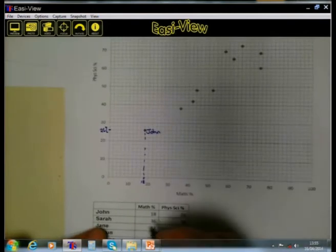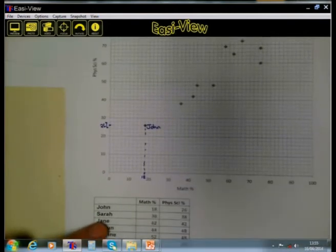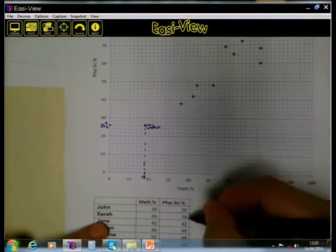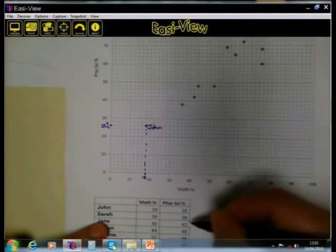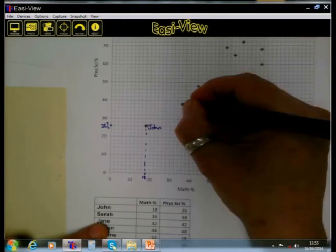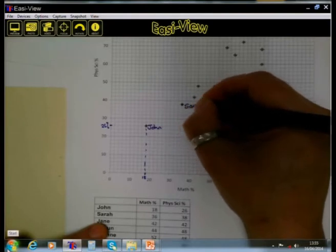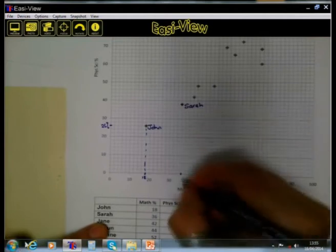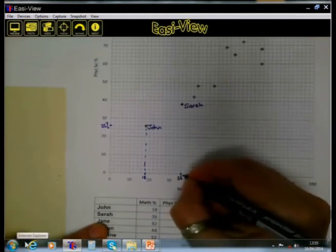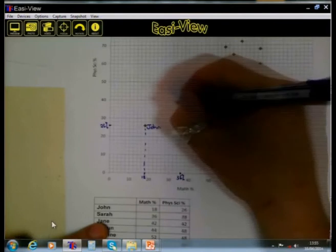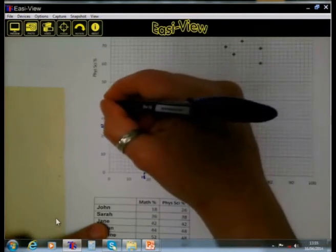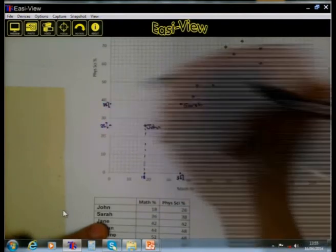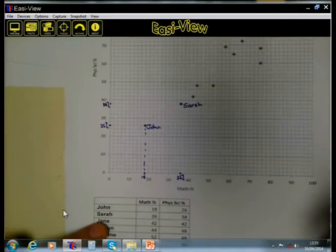Now, just like so, we can go on to Sarah. Sarah had 36% for mathematics, 36% and 38% for physical science. So this dot here is Sarah. Because if we come down here, we will see that Sarah had 36% for maths and on this side, we can see that she had 38% for physical science.